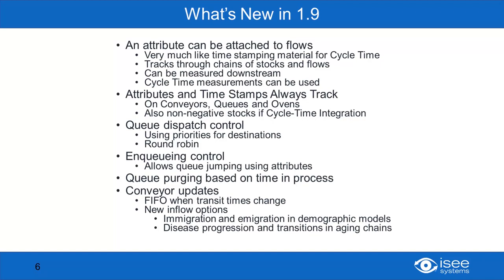For queue dispatch and control, we can use priorities for destinations and round-robin dispatch, which is a way of dispatching to different ovens. In queuing control, which means you can jump the queues — batches of material coming into a queue can be given a higher priority. And then we'll have queue purging based on time and process, which allows you to get rid of older material, either in the case of perishables or if you want to expedite processing for something.